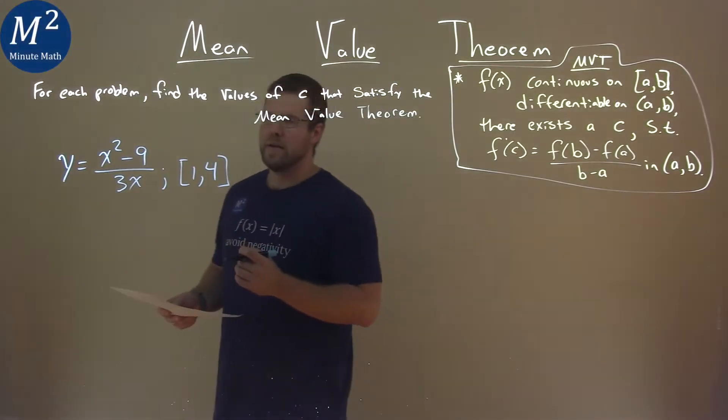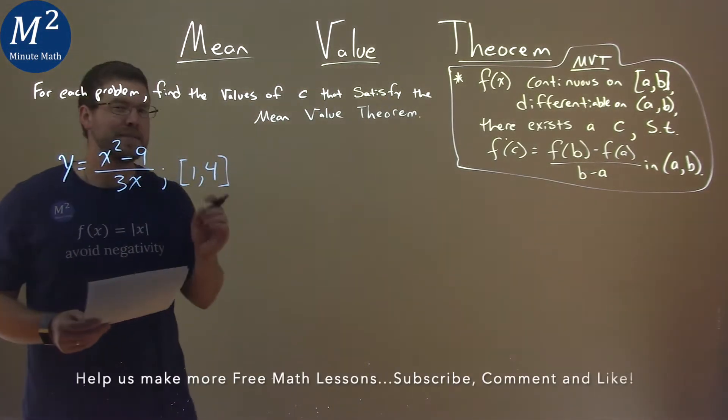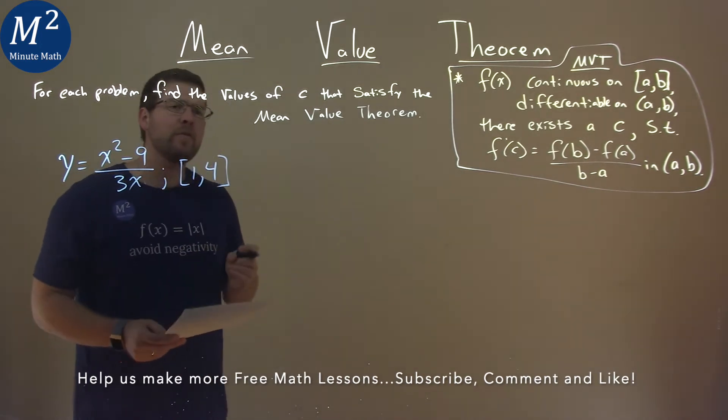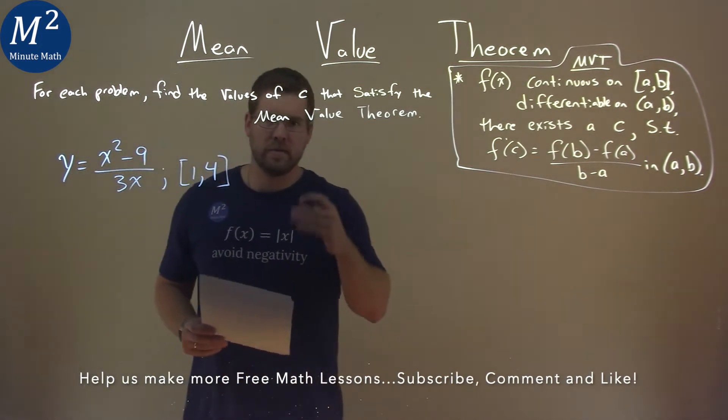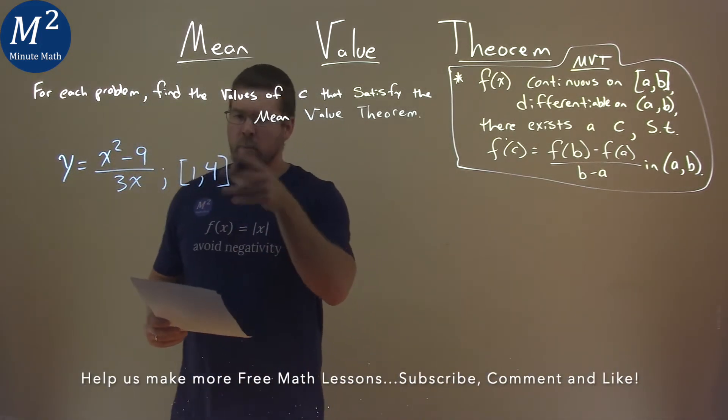I'm given this problem right here, y equals x squared minus 9 over 3x, and we want to find the value of c that satisfies the mean value theorem on our interval from 1 to 4.